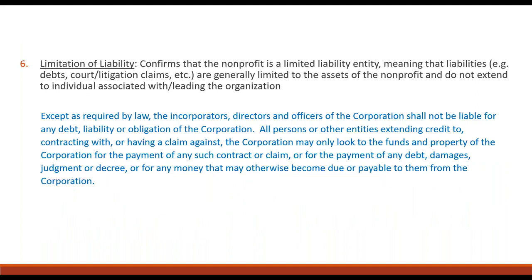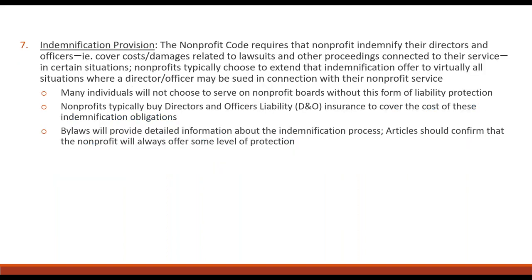Sixth, recommend a provision limiting liability — confirming your nonprofit is a limited liability entity and that all persons extending credit or having a claim against the nonprofit may only look to the funds and property of the nonprofit, not to the personal funds of incorporators, directors, officers, and so on. Seventh, an indemnification provision. In DC, the Nonprofit Code legally requires that your nonprofit indemnify directors and officers, meaning the nonprofit steps up to cover costs related to lawsuits connected to these people's service to the nonprofit.